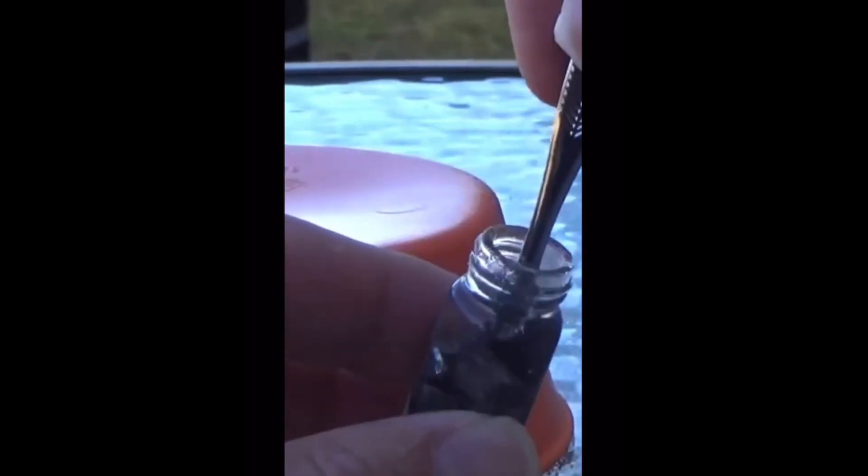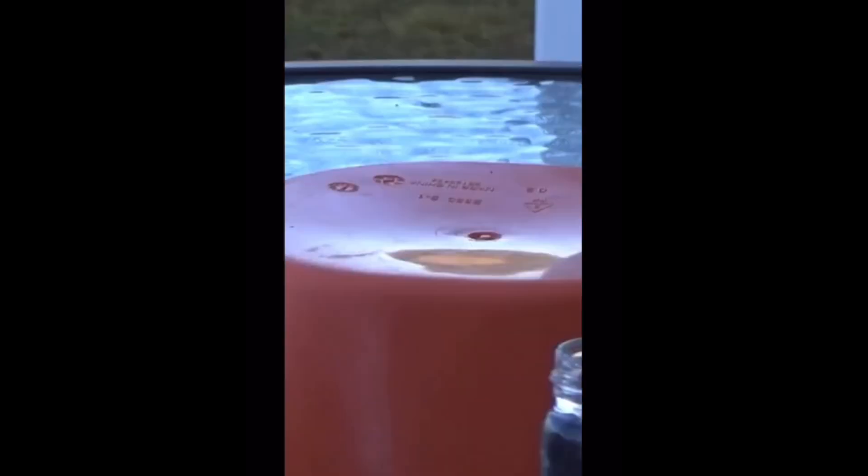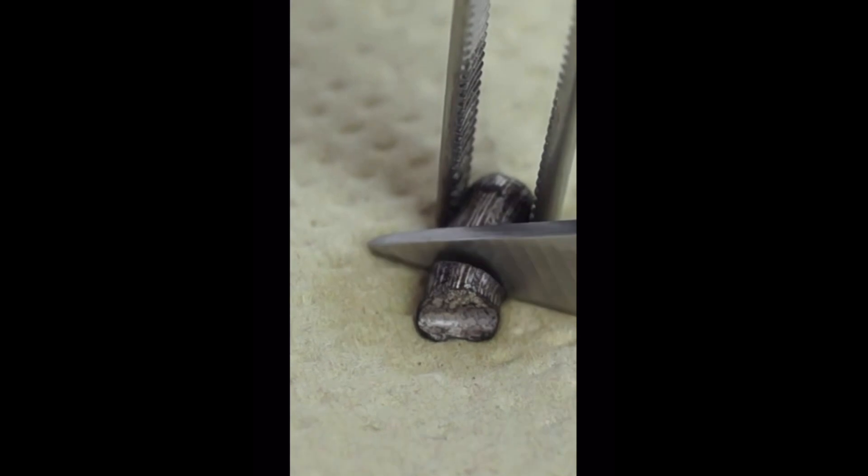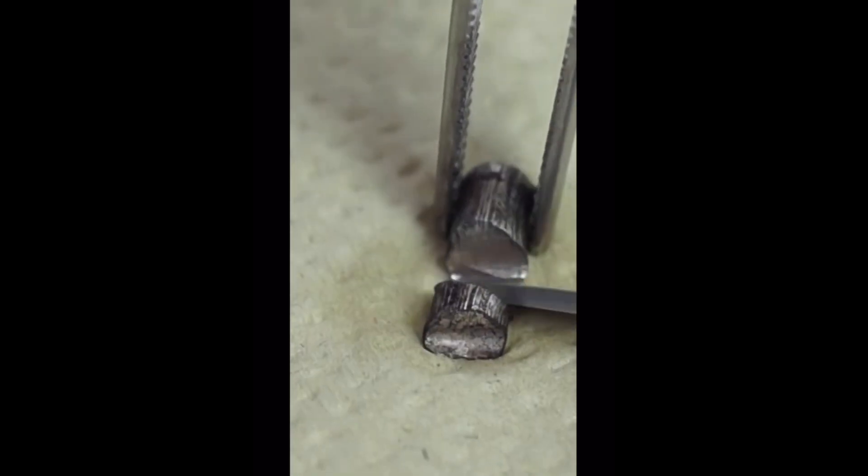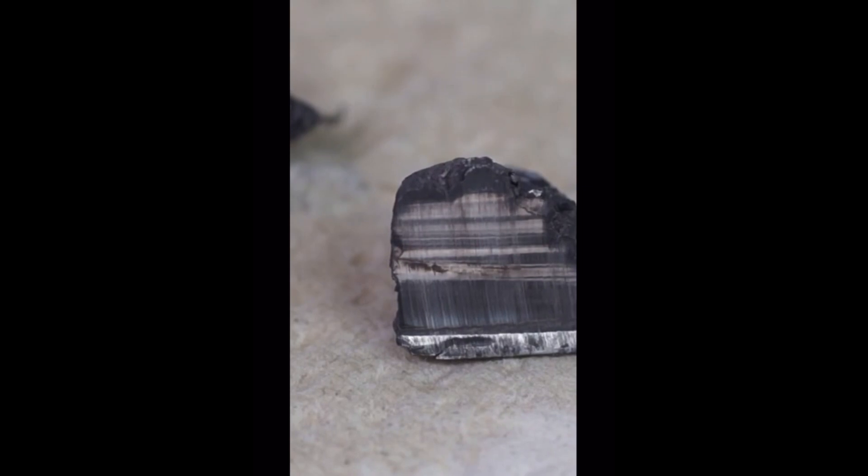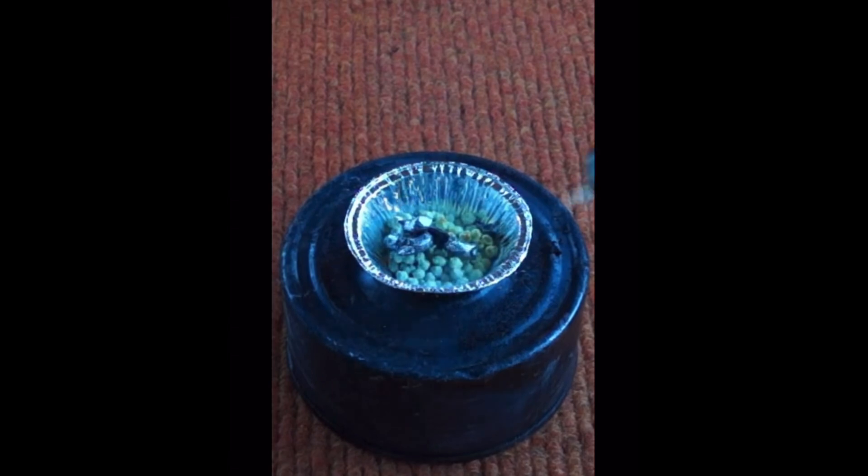Lithium is so soft you can easily cut it with a knife. Its shiny surface doesn't last long though. When exposed to air, lithium reacts quickly, forming a dark layer of lithium oxide. It's like the metal protecting itself from the environment. But it gets even more exciting.